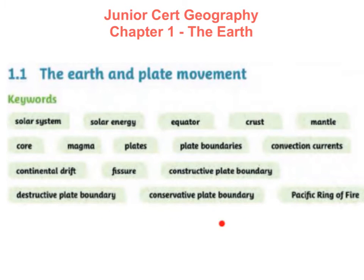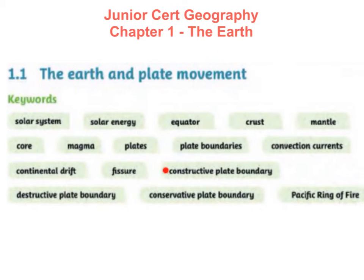These are the key words we're going to look at in this chapter: solar system, solar energy, equator, crust, mantle, core, magma, plates, plate boundaries, convection currents, continental drift, fissure, constructive plate boundary, destructive plate boundary, conservative plate boundary, and Pacific Ring of Fire.